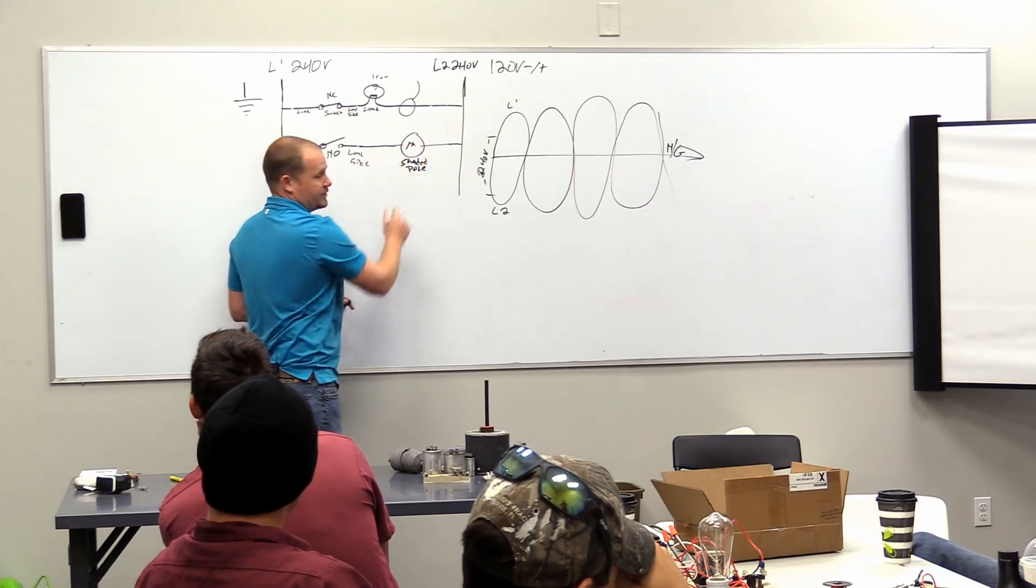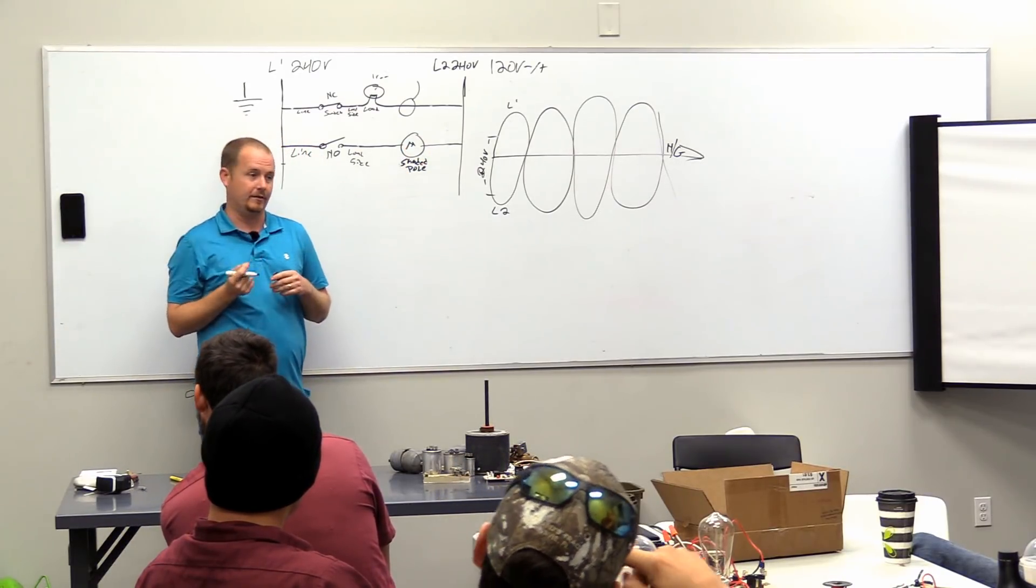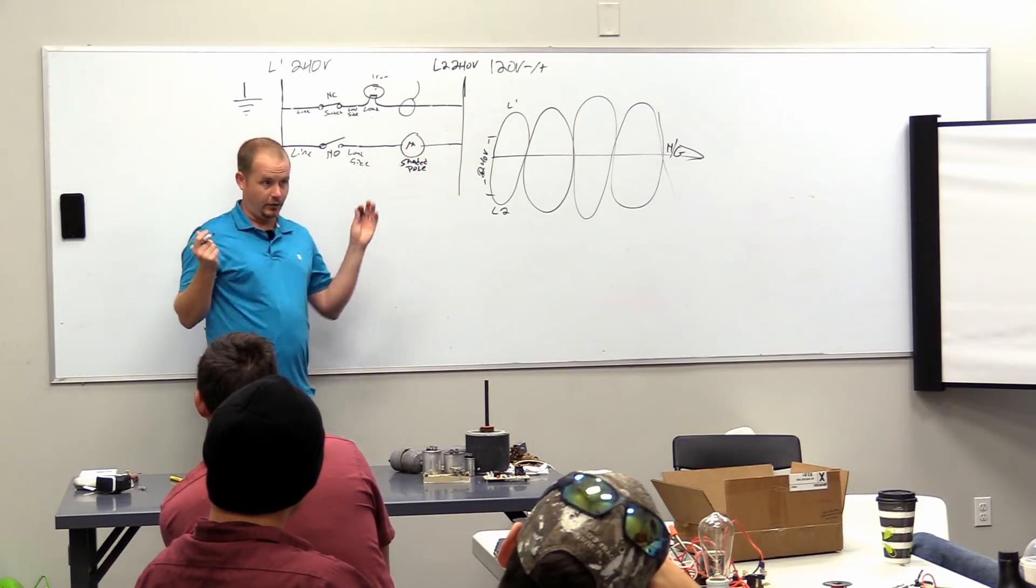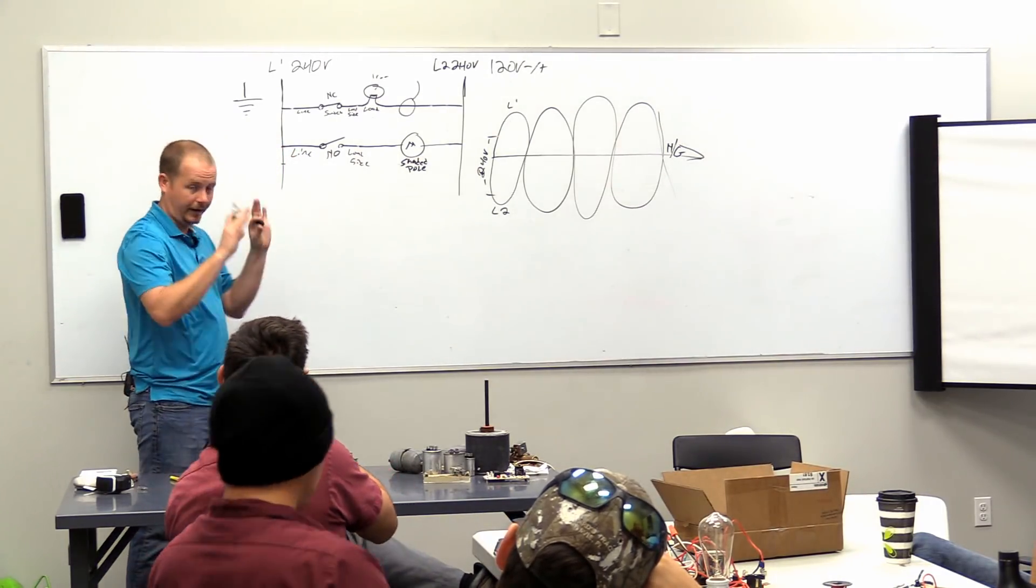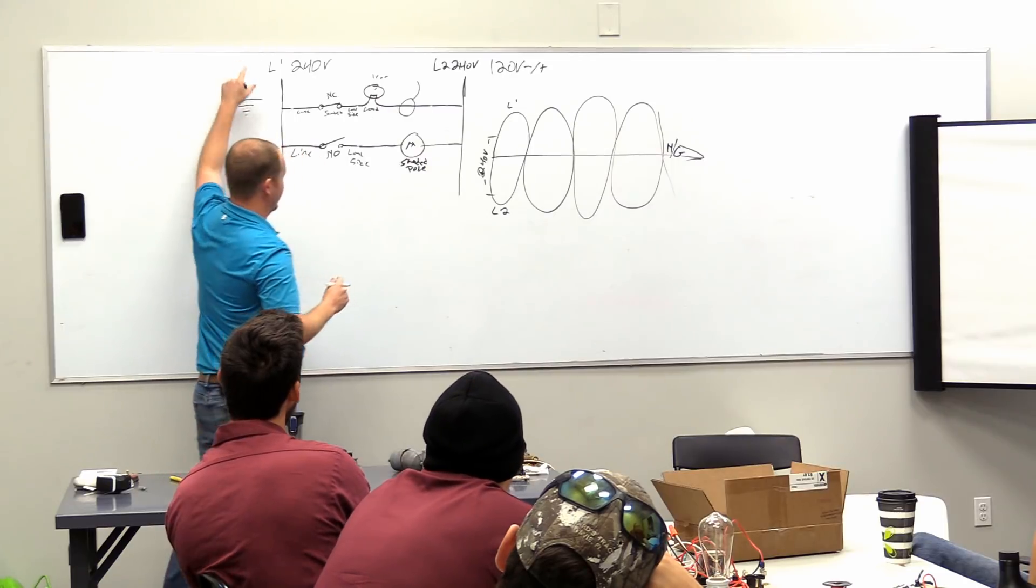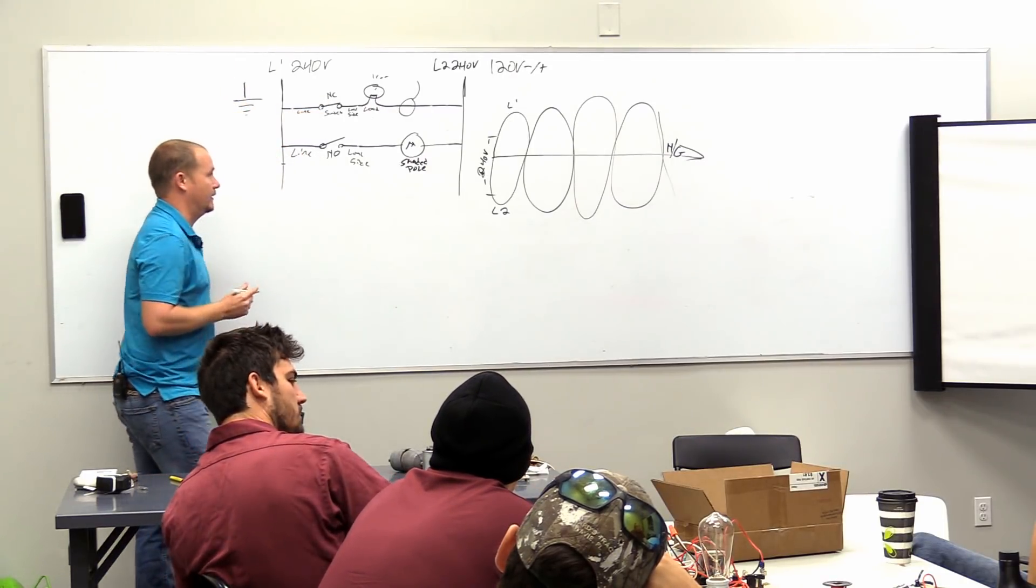All right. So we've got a shaded pole motor here. We know it's shaded pole because it only has two legs coming into it, right? Otherwise it would have to have a capacitor if it was a permanent split capacitor type motor. All right. So we've got 240 volts. We've got ground here.